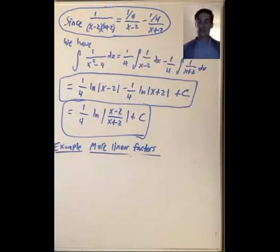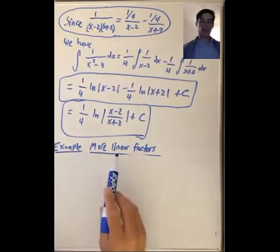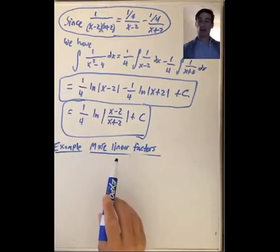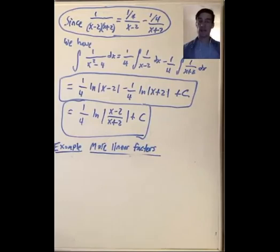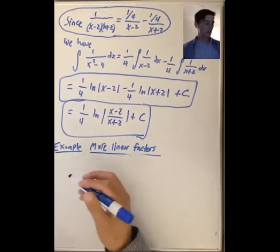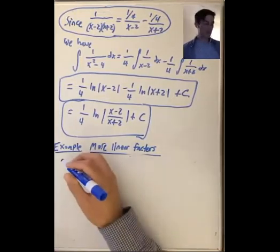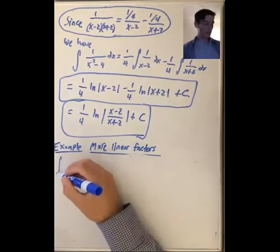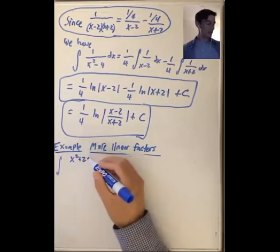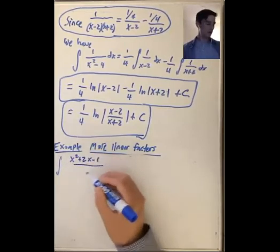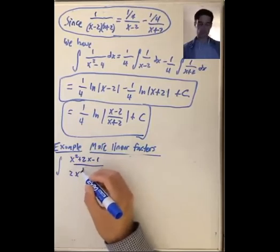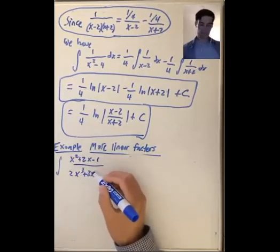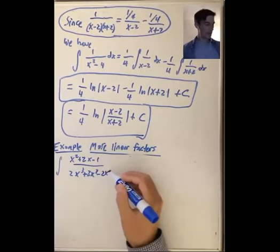Let's now look at an example where your denominator has more linear factors. So far, in each case, the denominator q(x) has factored as x minus something times x minus something else. But what if your denominator is a little more complicated? Like, what if we wanted the integral of x squared plus 2x minus 1 over 2x cubed plus 3x squared minus 2x dx?